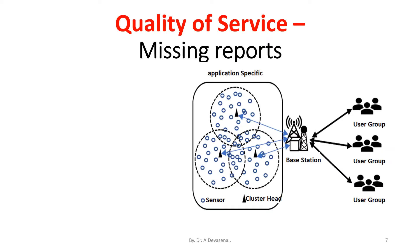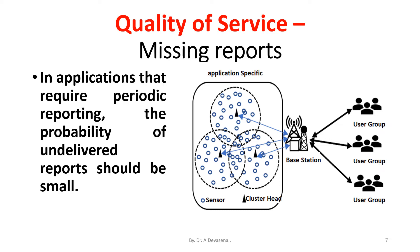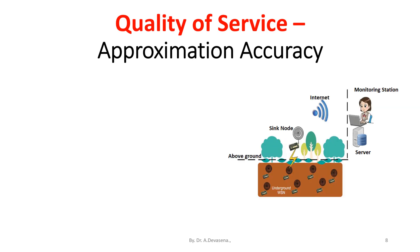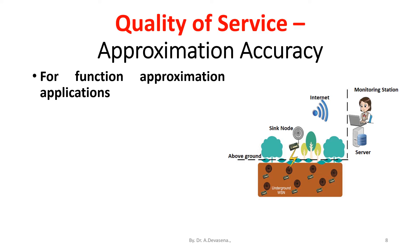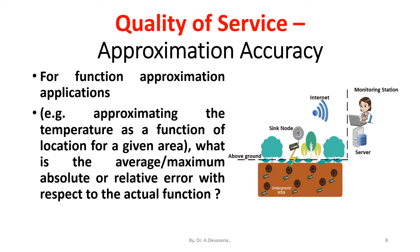Missing reports. In applications that require periodic reporting, the probability of undelivered reports should be small. For function approximation applications — for example, approximating the temperature as a function of location for a given area — what is the average or maximum absolute or relative error with respect to the actual function?